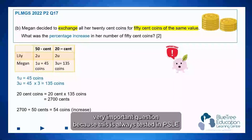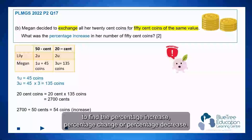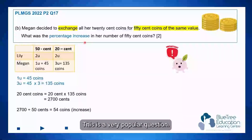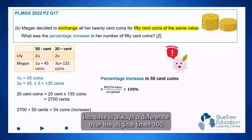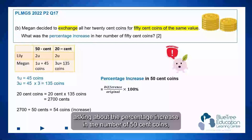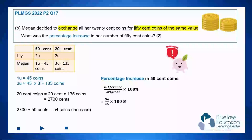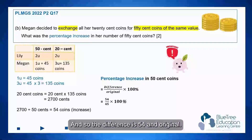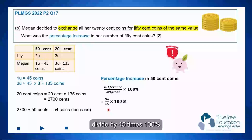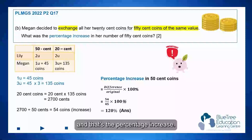This is a very important question because it is always tested in PSLE to find the percentage increase, percentage change, or percentage decrease — a very popular question, so make sure you learn this. Remember: to find a percentage increase, it is always the difference over the original times 100. Since they're asking about the percentage increase in the number of 50 cent coins, take reference with the 50 cent coins. The difference is 54, and the original — looking back at the table — was 45 coins. So 54 divided by 45 times 100 gives you 120%. That's the percentage increase.